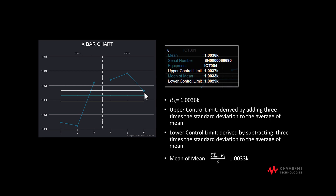The value of each point represents the mean of range. The mean of R6 is 1.0036000, and we can see the serial number of the DUT and the name of the test equipment.